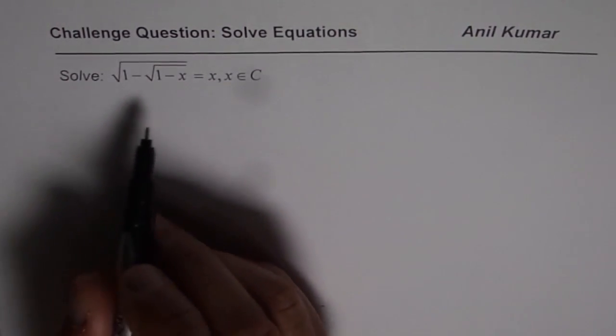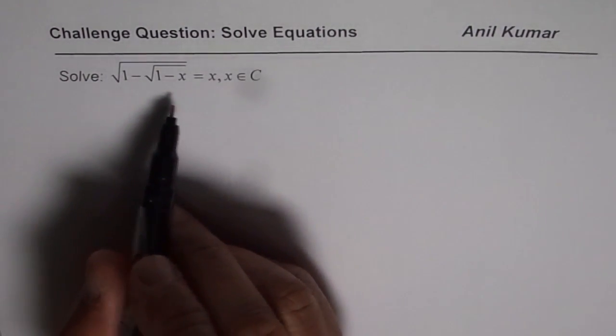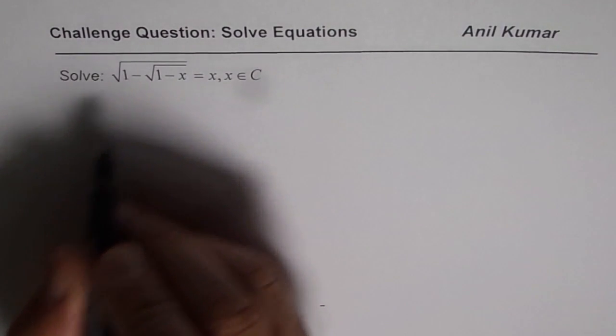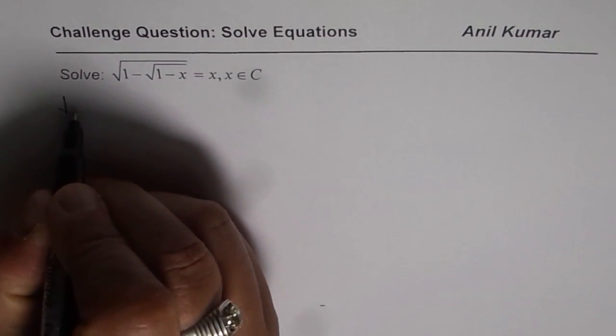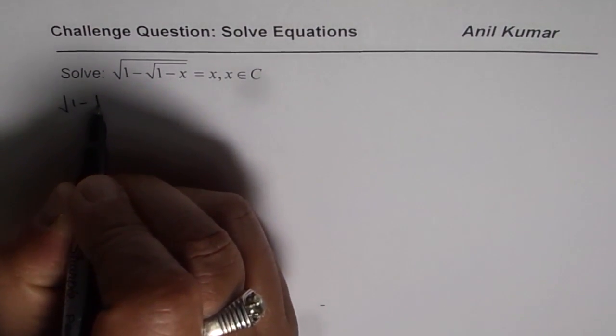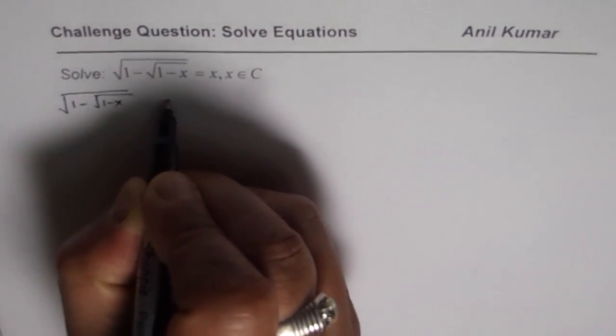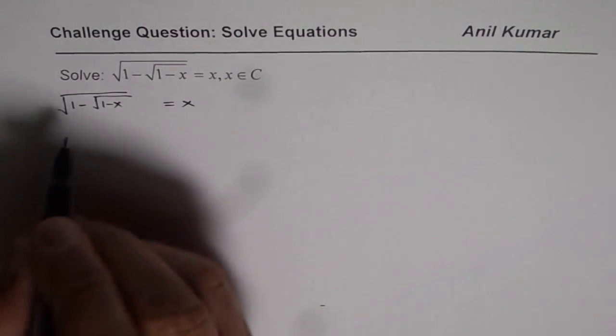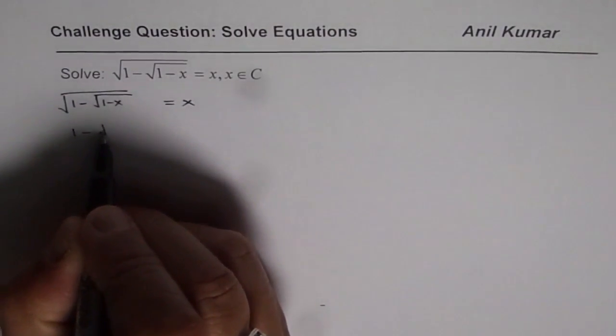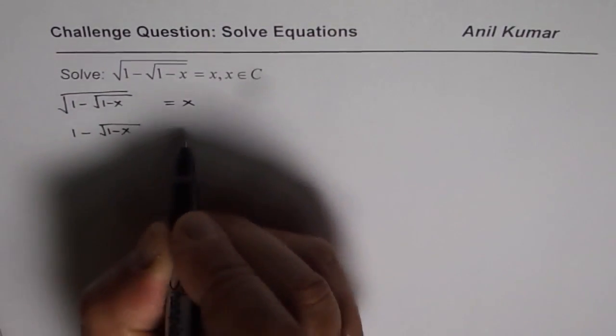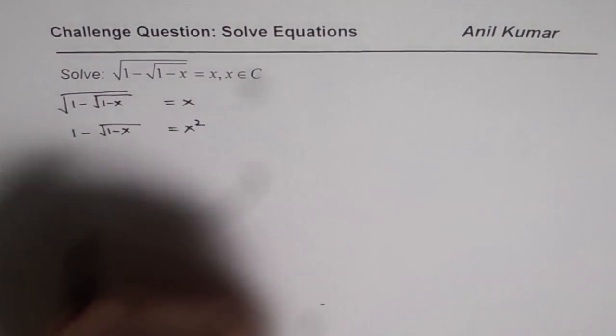Now to solve radical equations we need to square both sides and then proceed. So let's rewrite the equation which is 1 minus square root of 1 minus x equals x. Now if I square both sides I will get 1 minus square root of 1 minus x equals x square.